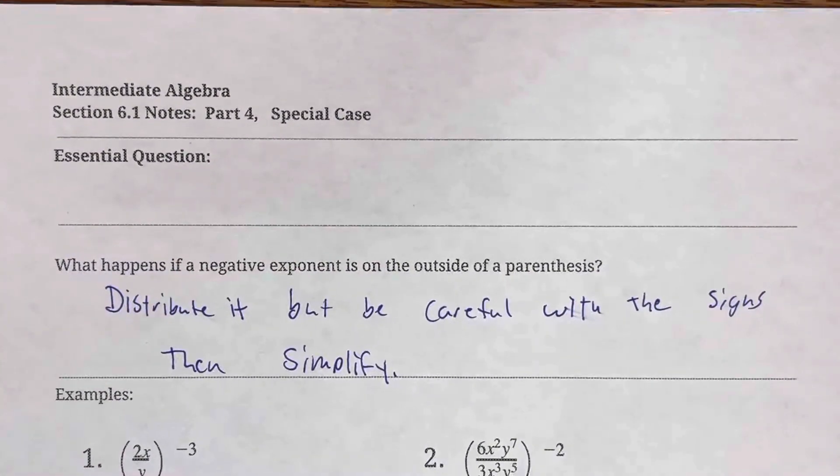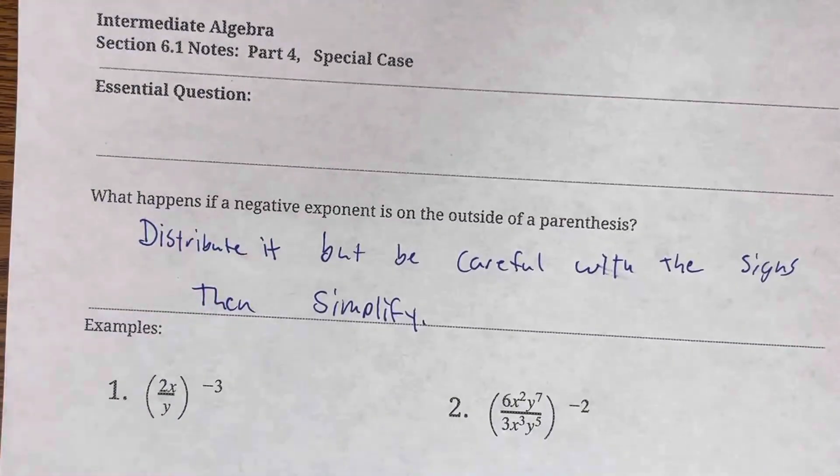All right, Mr. Ahmed here for 6.1 part 4. We're going to look at a special case here where we have a negative exponent outside the parentheses. And these are just a little bit tricky because you have to be super careful with your signs.